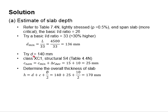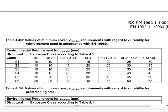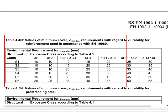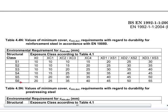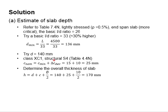The exposure class is XC1. By referring to table 4.4N and the recommended strength class S4, the required cover for durability cmin is 15. Add in 10 mm as the deviation delta cdev. The nominal cover will be 25 mm.